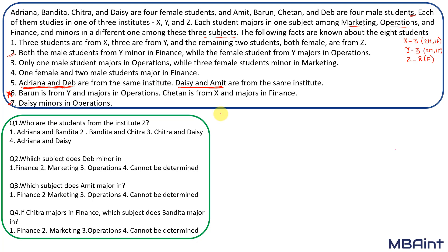Each student has three attributes: gender (which we already know), college or institute, and majors and minors. So we can easily draw a table with columns for student, college, major, and minor. Let me draw the table and try to put this information in.